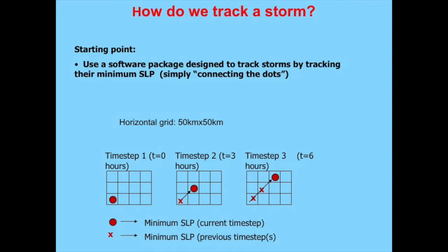We're looking at gridded data — specifically the lowest sea-level pressure point relative to surrounding grid boxes. The data is three-hourly, and each of the runs is three-hourly for 33 years. At time step one, that red spot is a storm. If the storm moves diagonally to the right at time step two, and further at time step three, you connect the dots — that's a storm track.